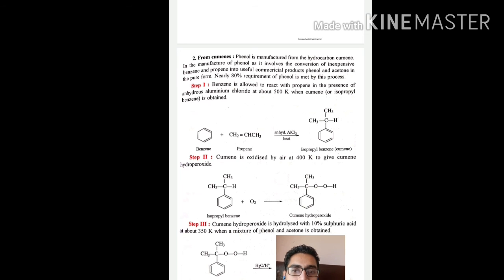From cumene, phenol can be manufactured from hydrocarbon cumene. In this process, phenol production involves the conversion of inexpensive benzene and propene into useful commercial products phenol and acetone.